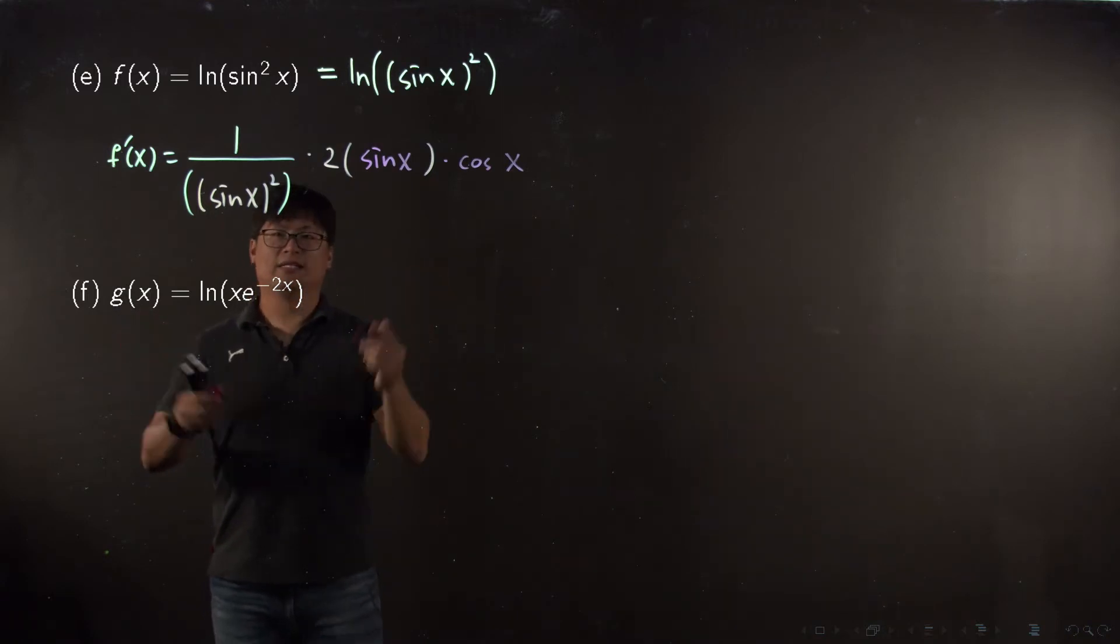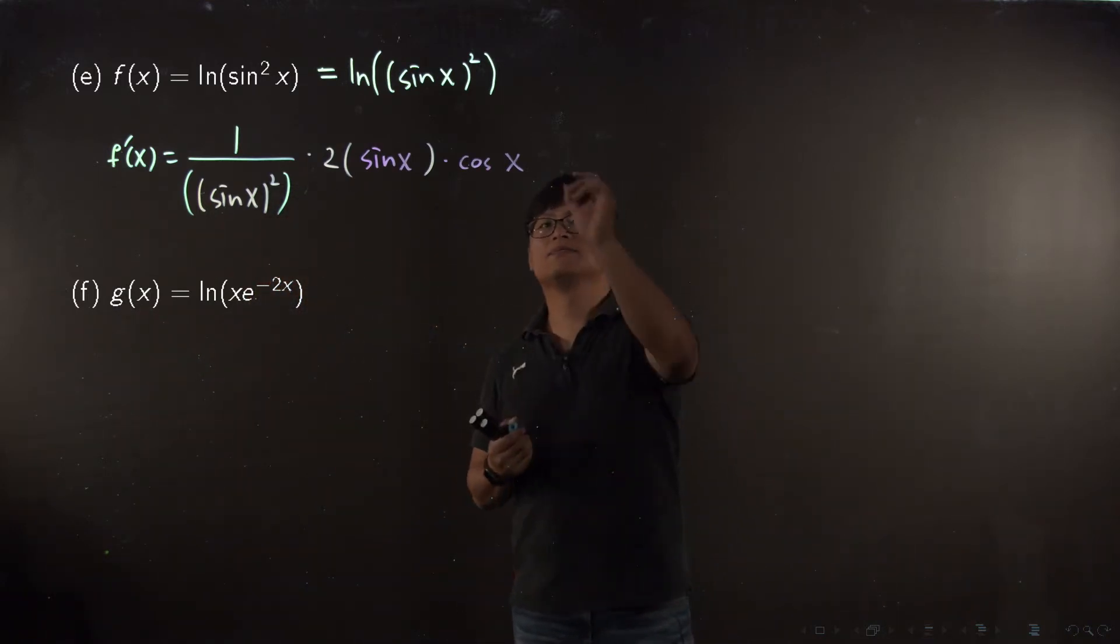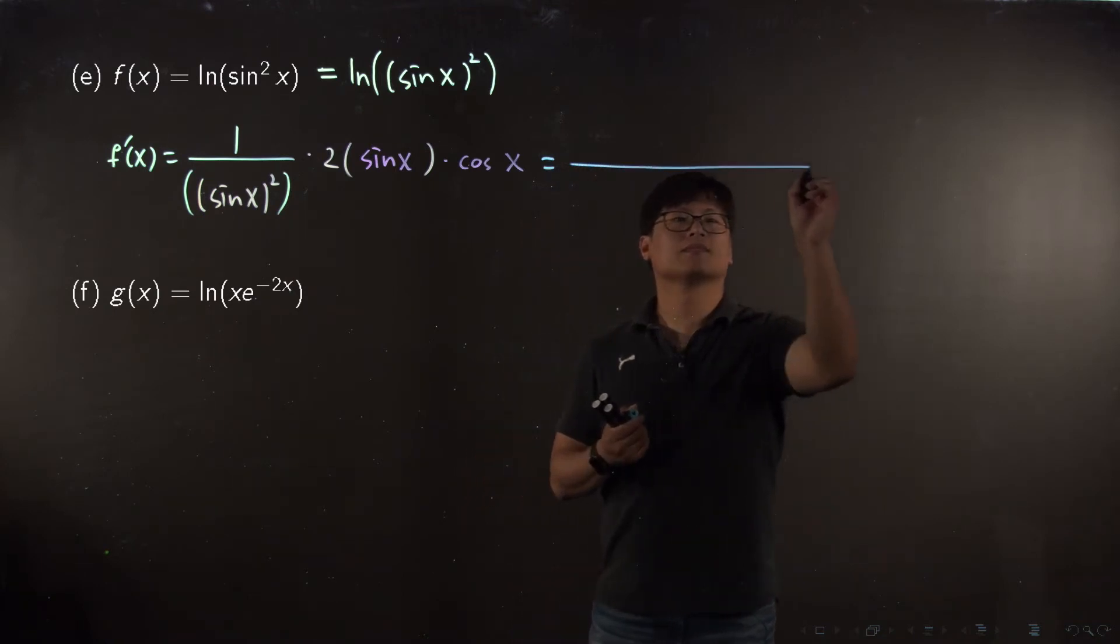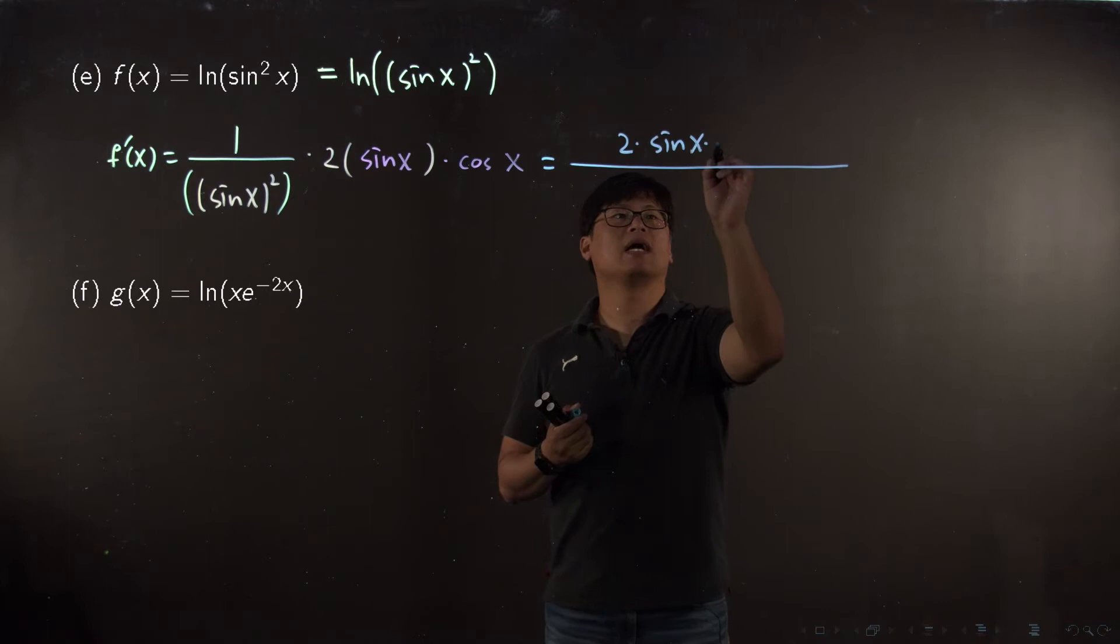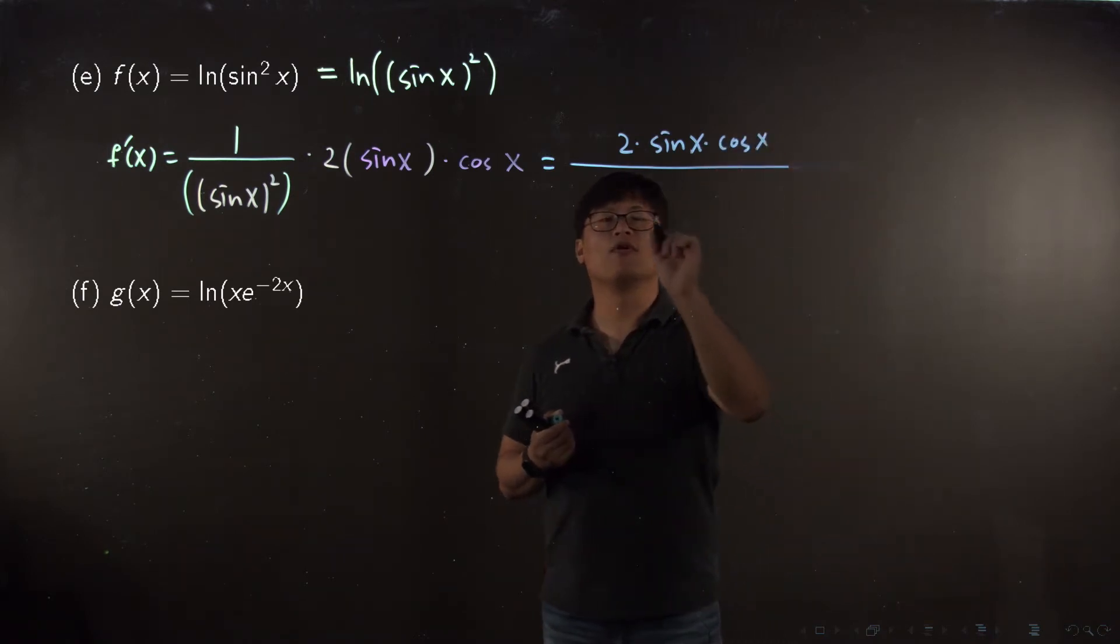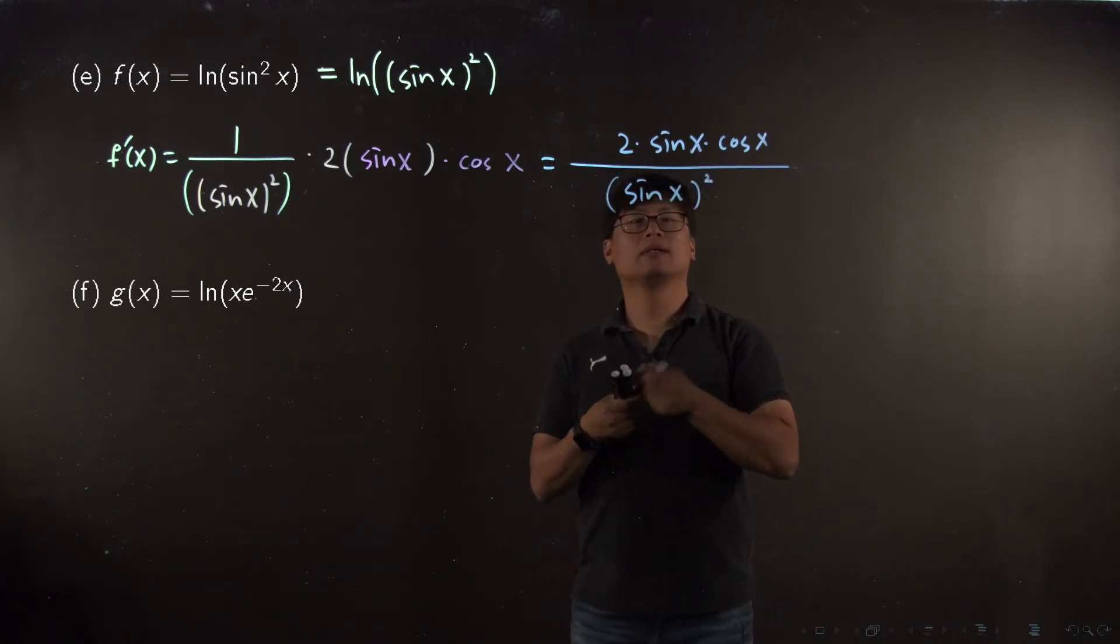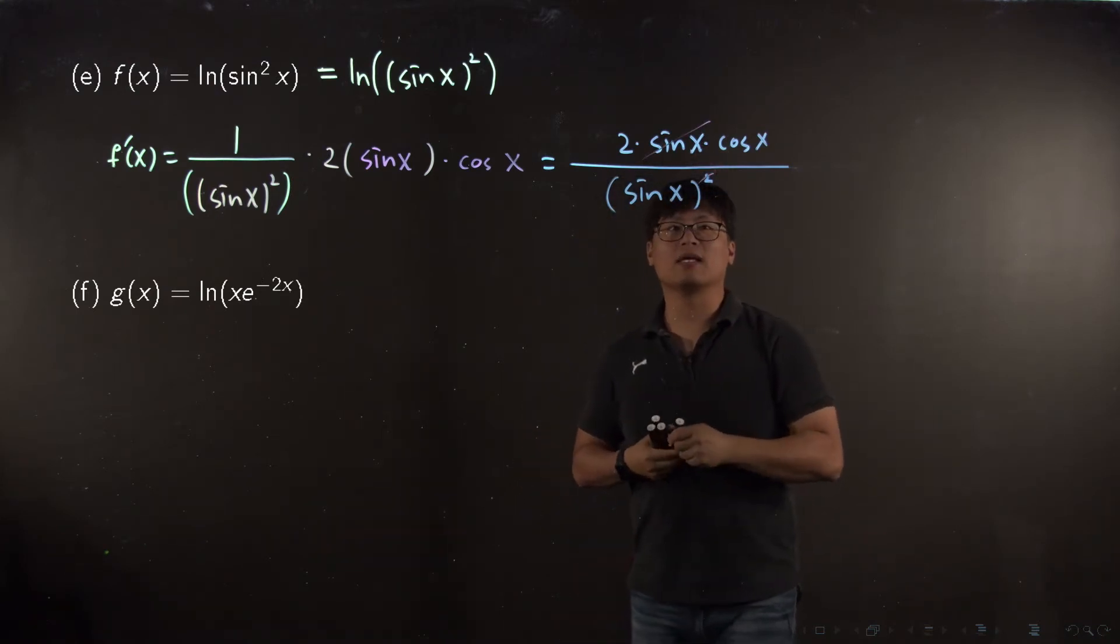Then you multiply sine x prime. That's it, this is the answer. Let me rewrite: 2 sine x times cosine x over sine x squared. Then we can simplify a little bit more. This guy and this guy can be cancelled, so your final answer is 2 cosine x over sine x.